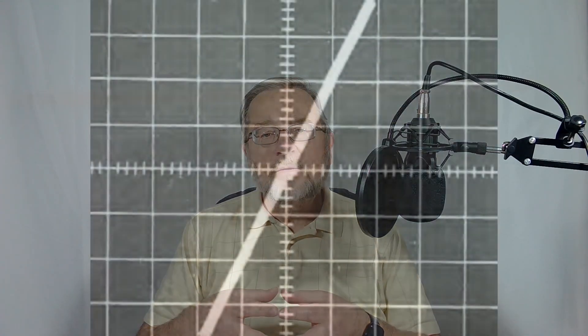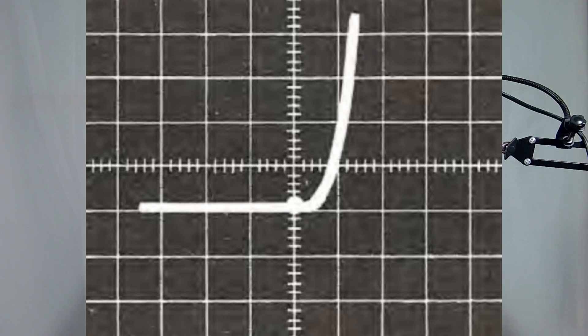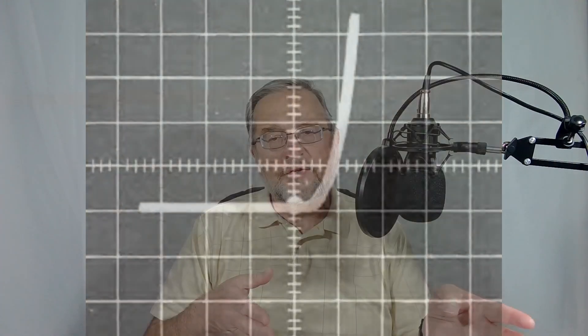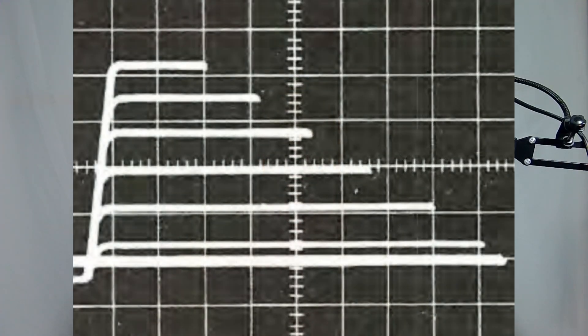Let's look at some examples of diagrams that can be obtained using a curve tracer on different components. This one is the characteristic of a resistor, which is obviously a straight line at an angle where the angle depends on the value of the resistance. This one instead is the typical characteristic of a diode — the current goes quickly up once the direct voltage exceeds the forward voltage, and the diode behaves as an open circuit for smaller or negative voltages. This one is a transistor, which gives us a whole family of characteristics based on the current flowing through its base.